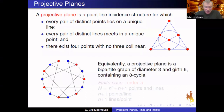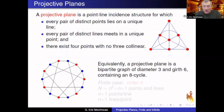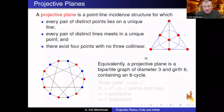If you prefer to think in graph theoretic language, look at the incidence graph, which is an equivalent way of describing a projective plane as a bipartite graph of diameter three and girth six, containing an 8-cycle. The 8-cycle is the non-degeneracy condition.